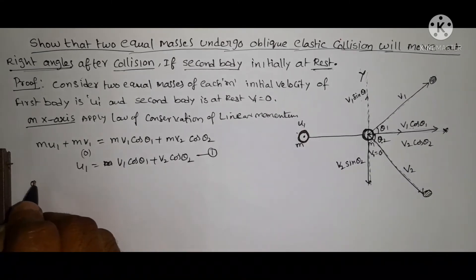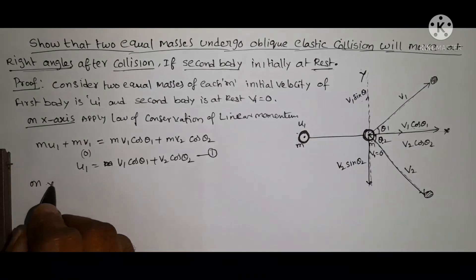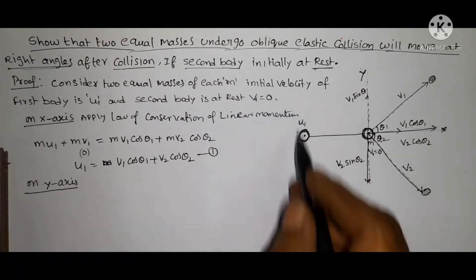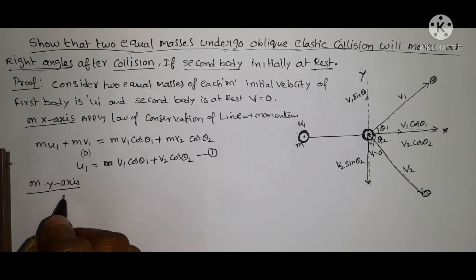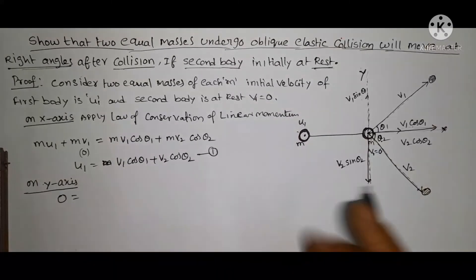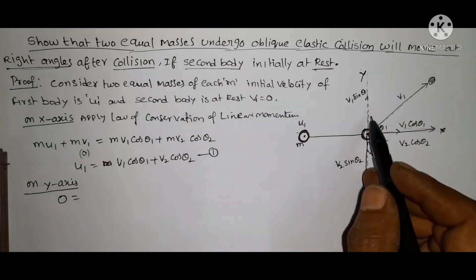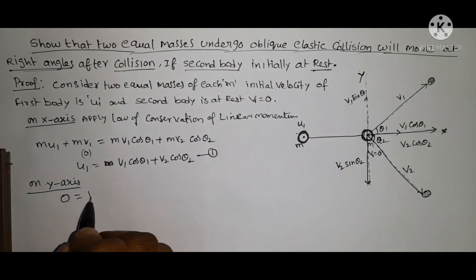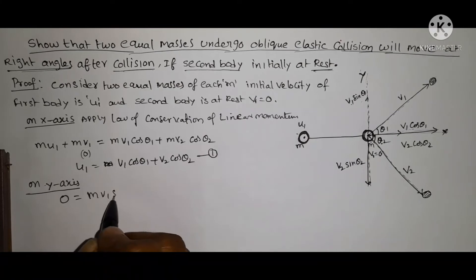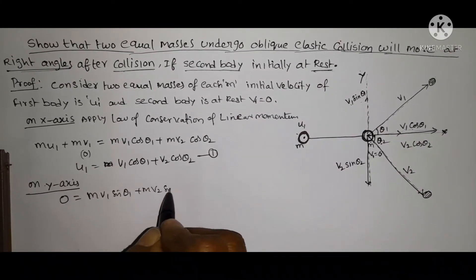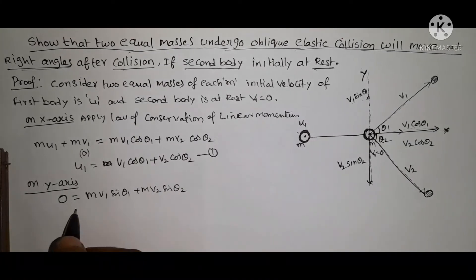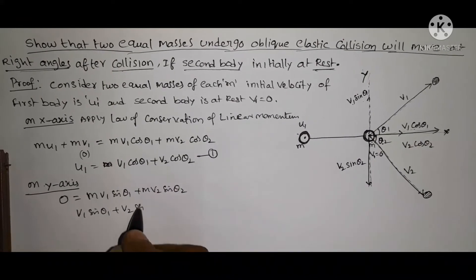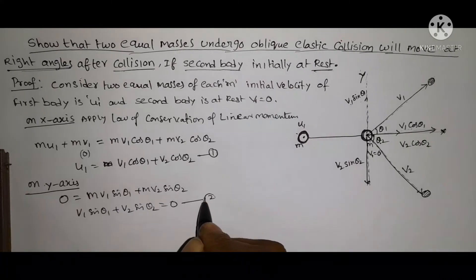Next, apply the law of conservation of linear momentum on the y-axis. Initially there is no momentum in the vertical direction, so initial momentum is zero. After collision the vertical components give M V1 sin theta 1 plus M V2 sin theta 2 equals zero. Cancelling M, we get Equation 2: V1 sin theta 1 + V2 sin theta 2 = 0.